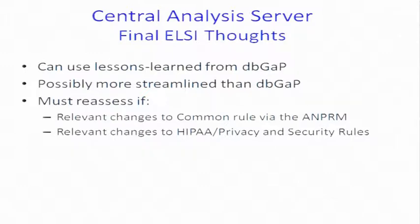Right now, HIPAA basically says that genetic information is not identifiable unless it's linked to other identifiers. I think it's a matter of time before the Office of Civil Rights, which oversees HIPAA, starts going into maybe genetic information is identifiable — at which point you're going to be talking a whole other set of regulations. That's my last slide. I can either say no time for questions, because it's time for Wiley, or take some questions.